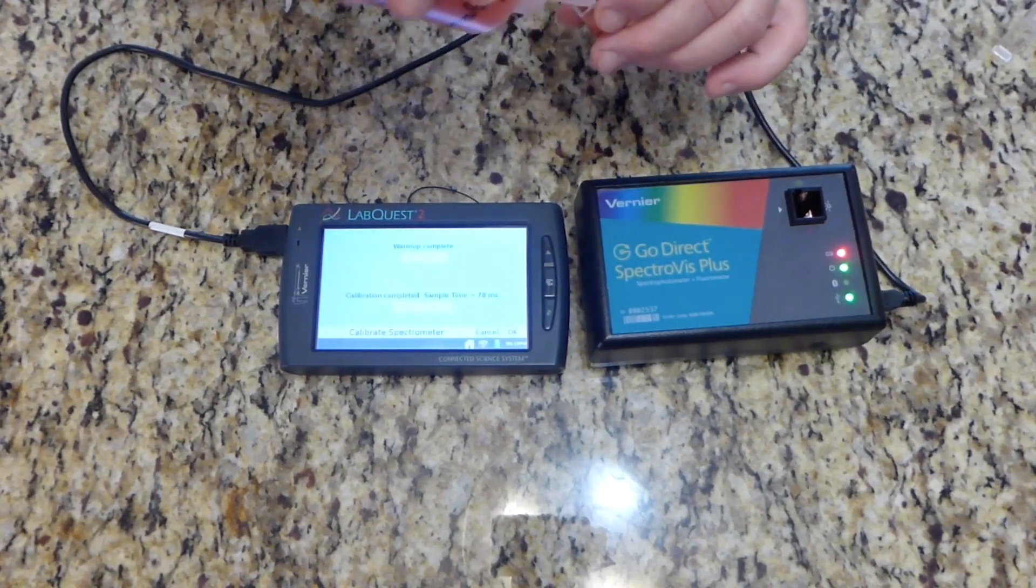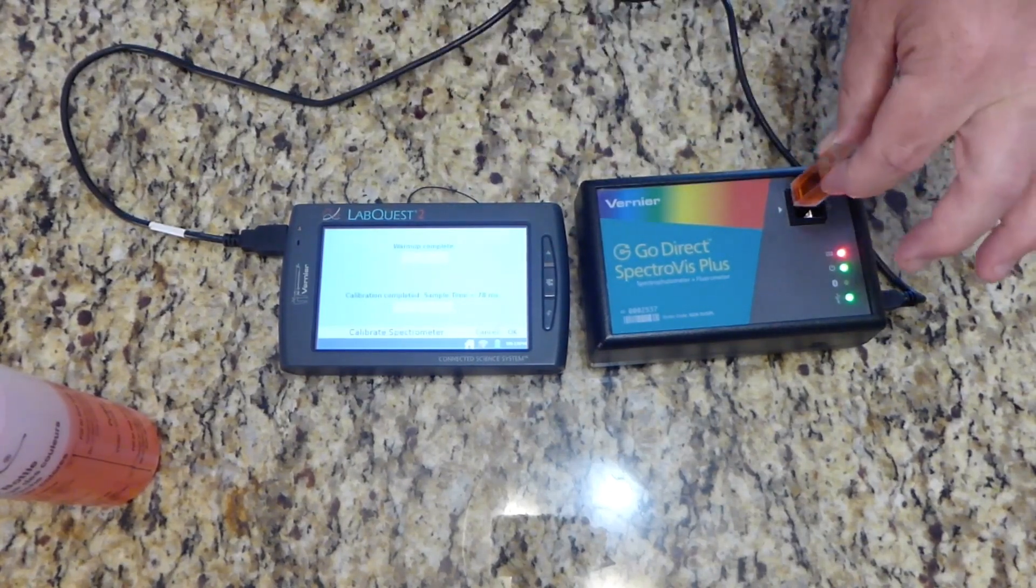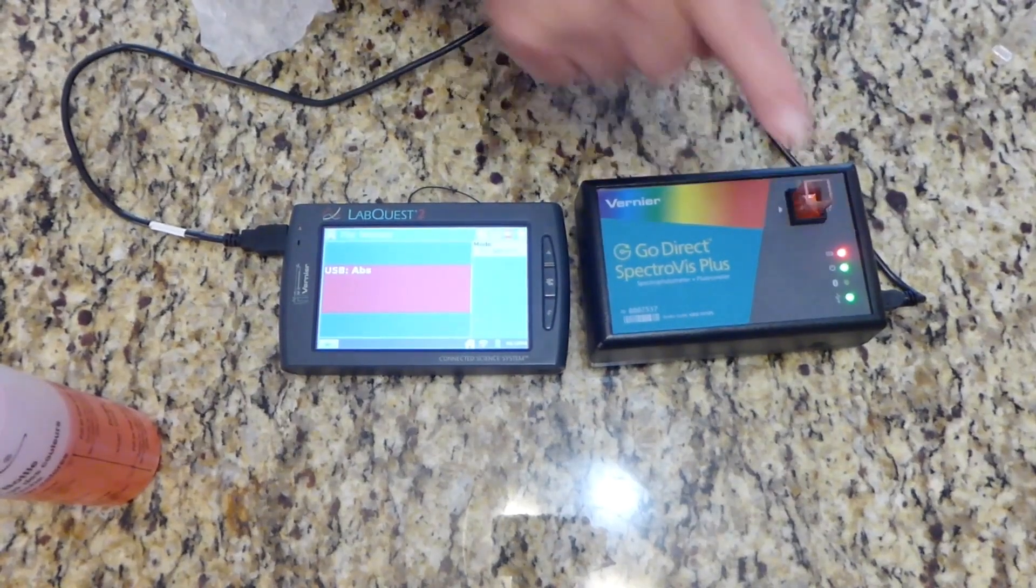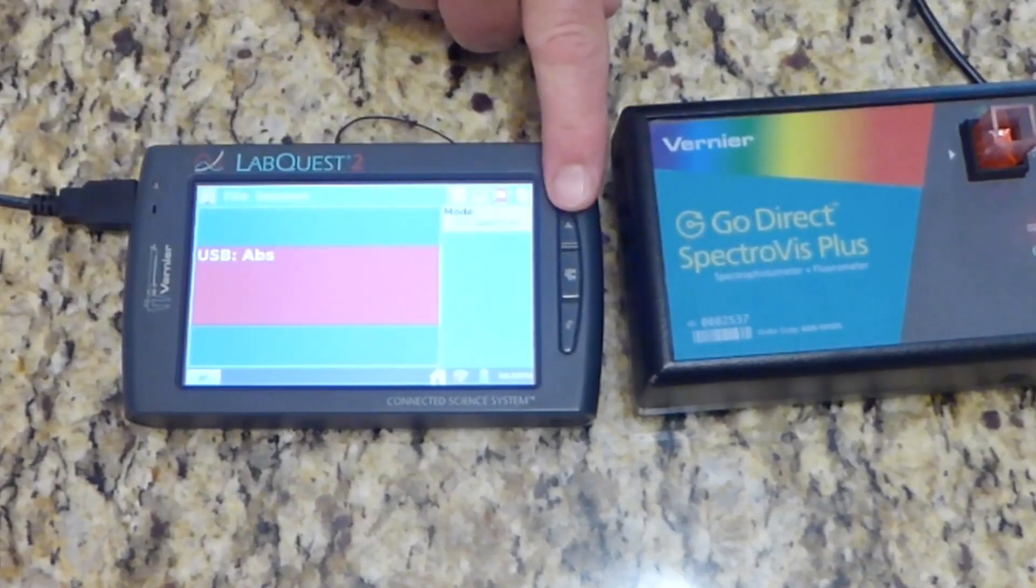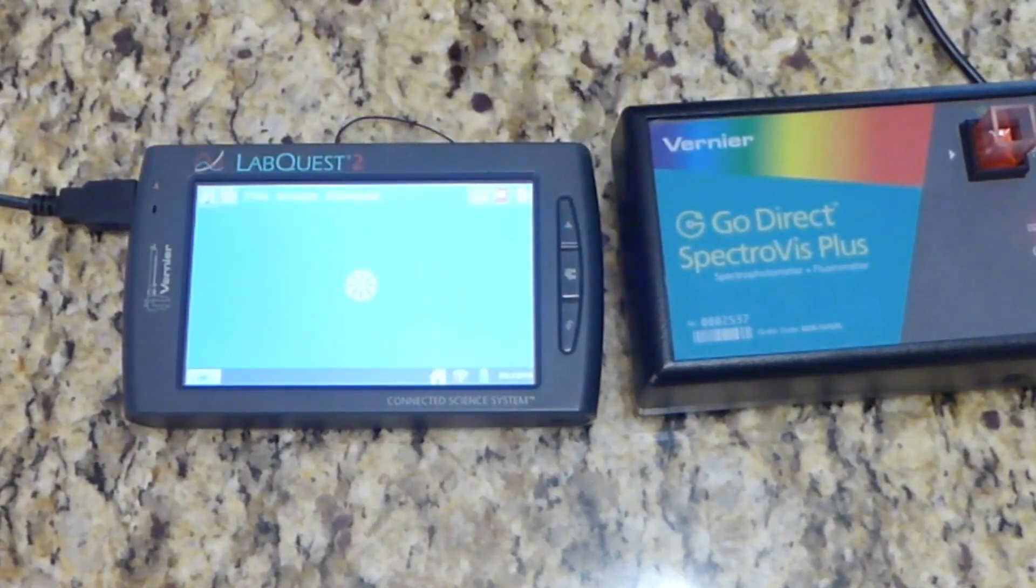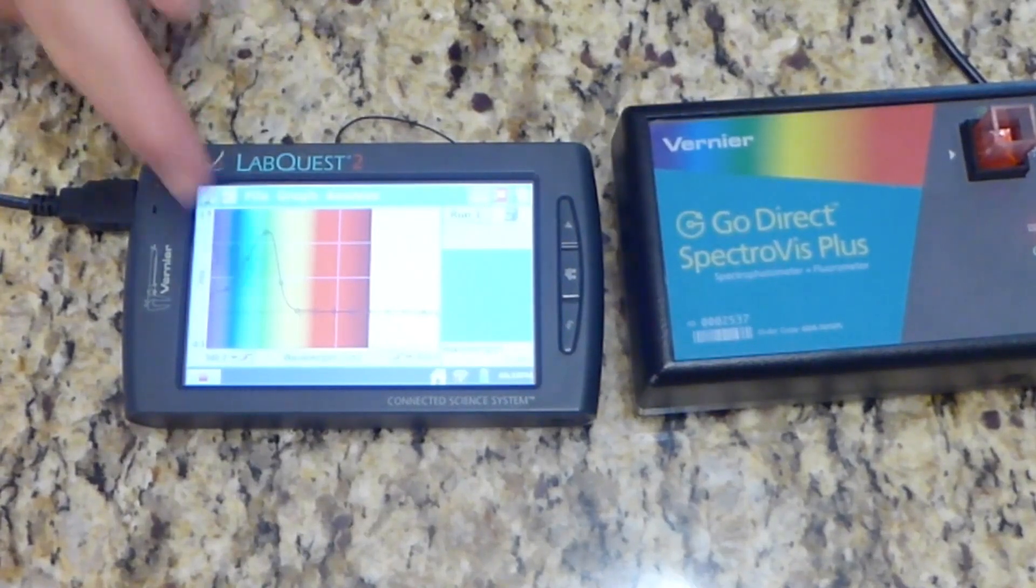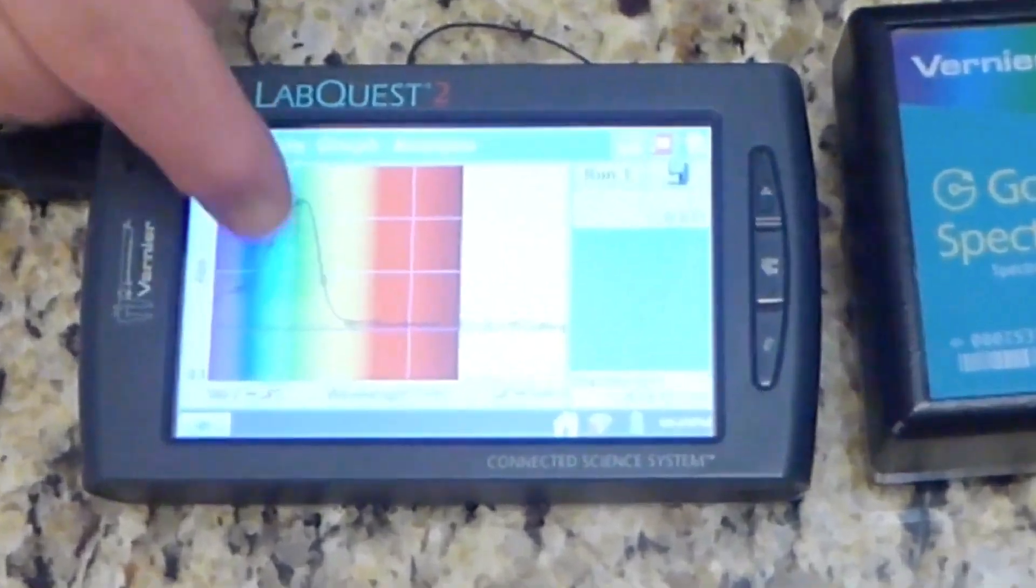Here's a red solution. I'm going to pour the red solution in the cuvette. I'm going to wipe it down and place it in. This one is different. You're going to have to put in the solution and then push the go button. Down at the bottom left, you push that button. And it's going to record all the different wavelengths at one time. As soon as the graph appears, then you can push the button again.